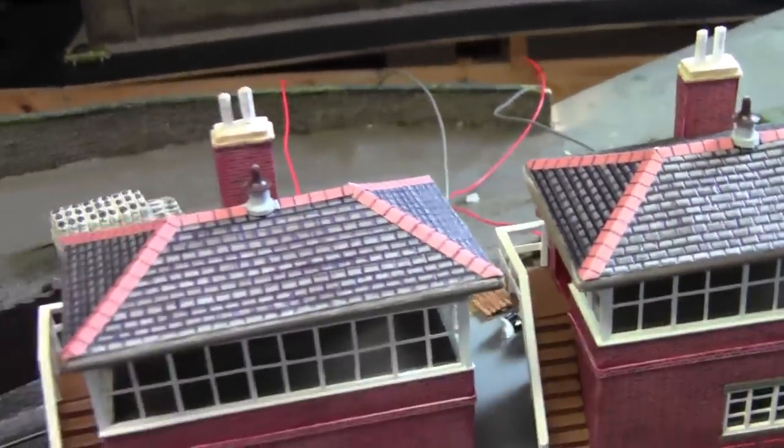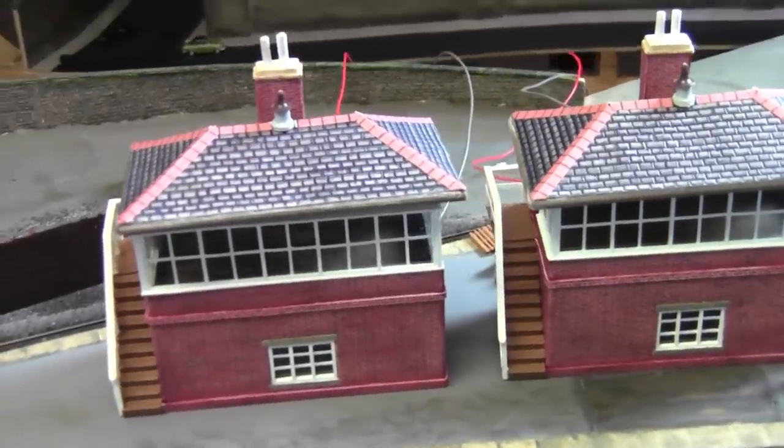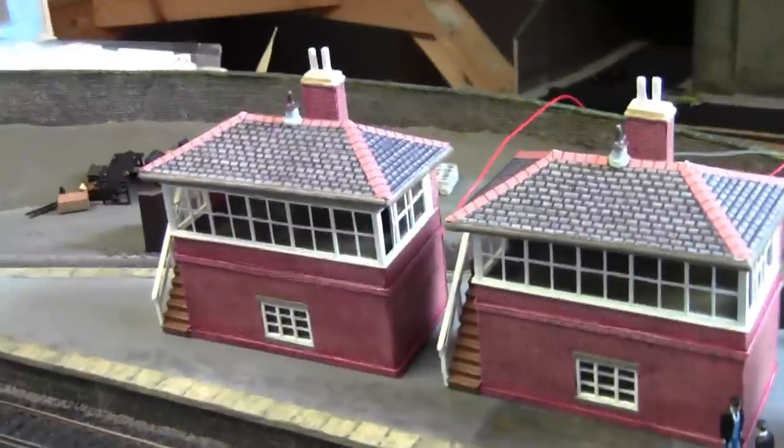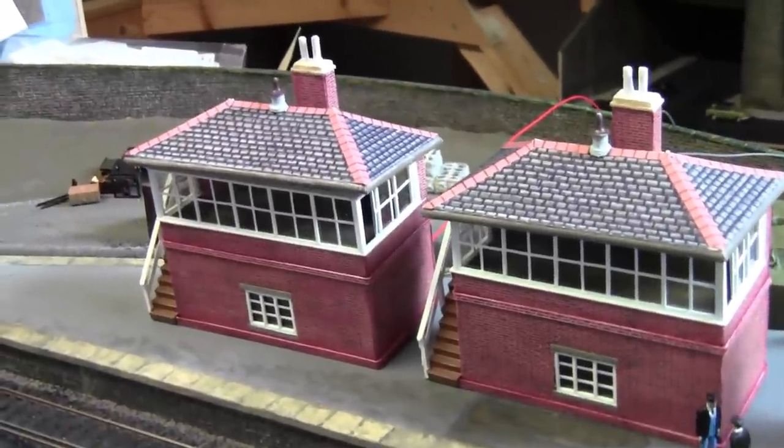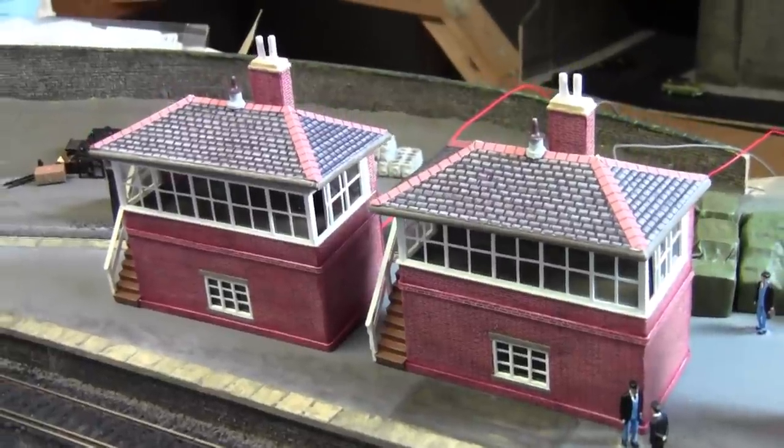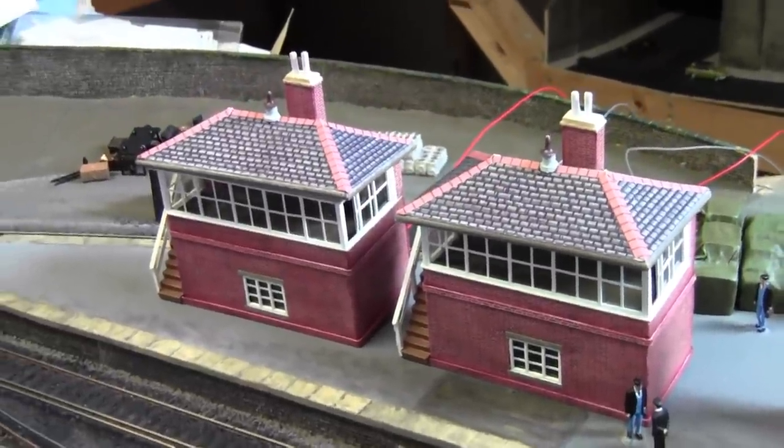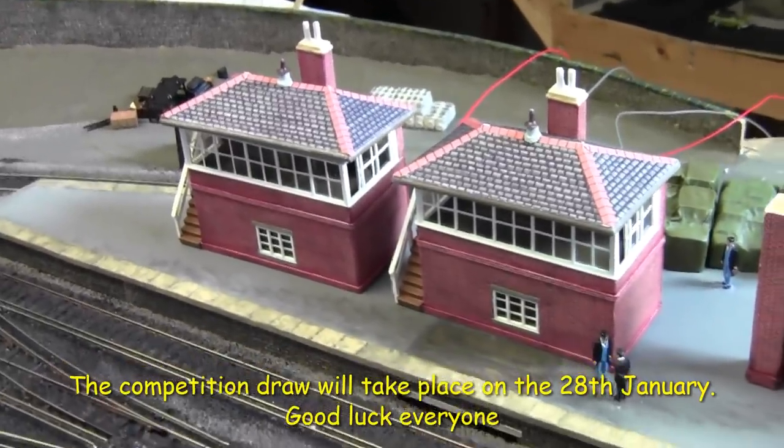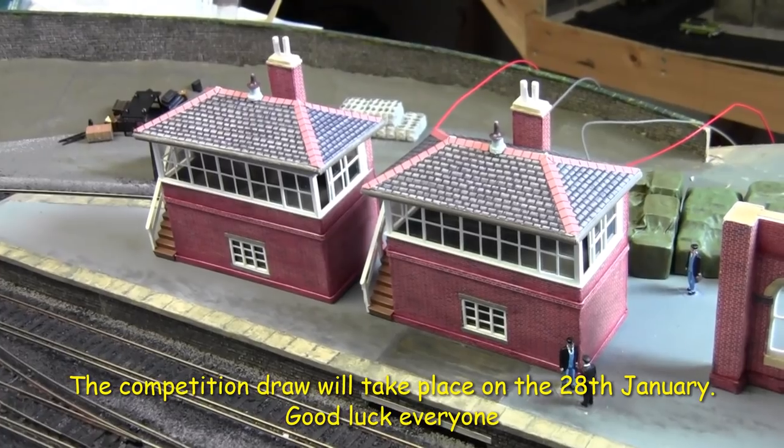So let's go through the questions one last time. The name of the signalman. How I worked out the dimensions for the chimney breast. And what is the subtle difference between the two signal boxes? So I hope that's all from me this week. Hope you enjoyed what you've seen. And good luck with the competition. Thanks for watching now. Bye.